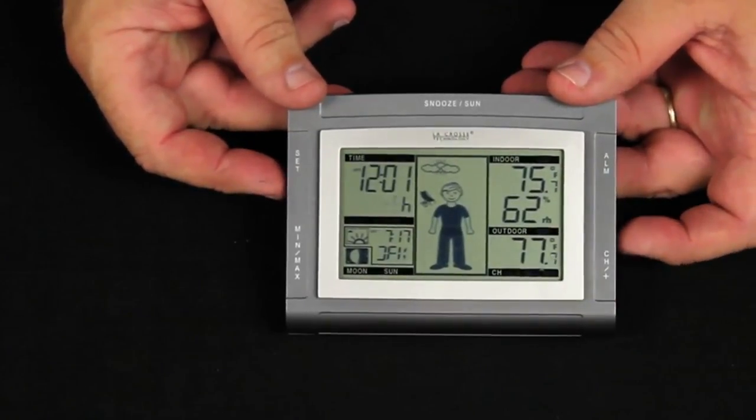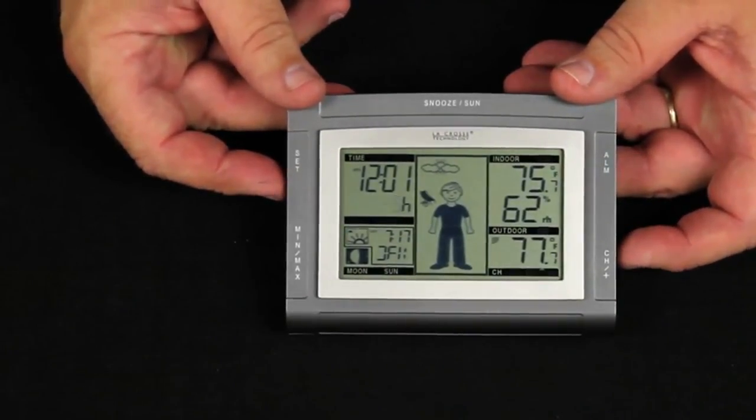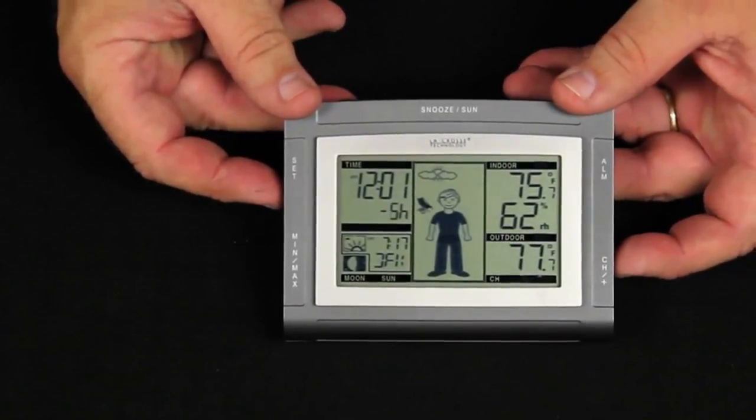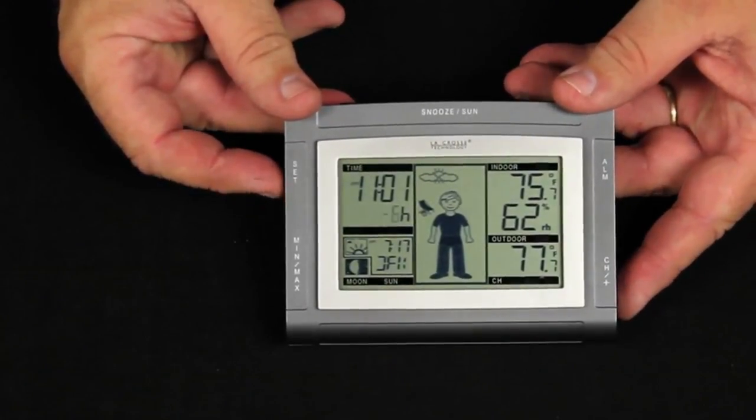We're going to press it again and we have our time zone flashing. It defaults to minus five which is the east coast. I'm in the Midwest so I'm going to set it to minus six.